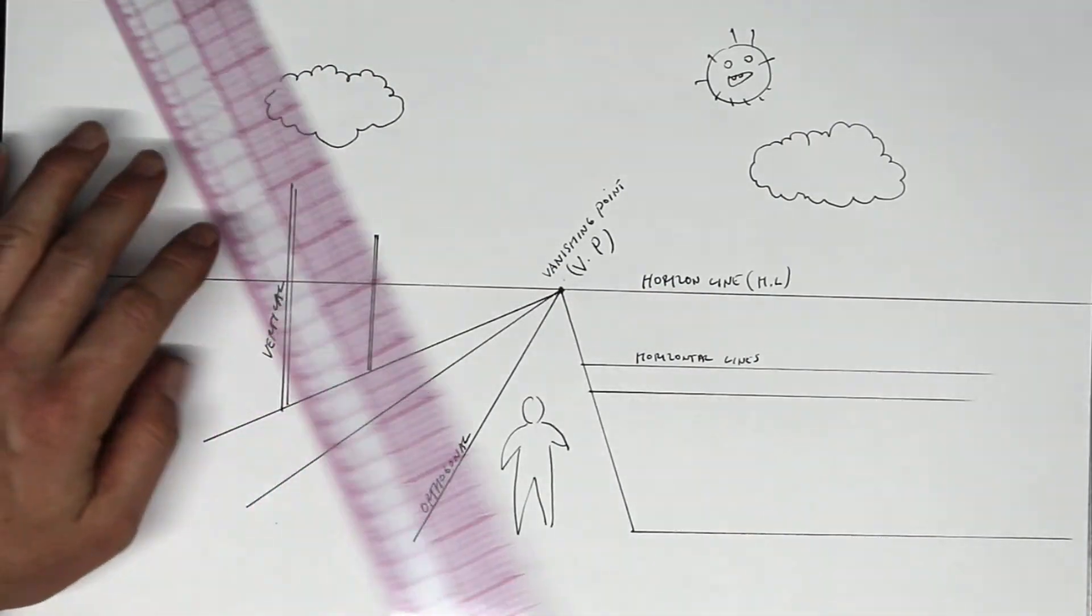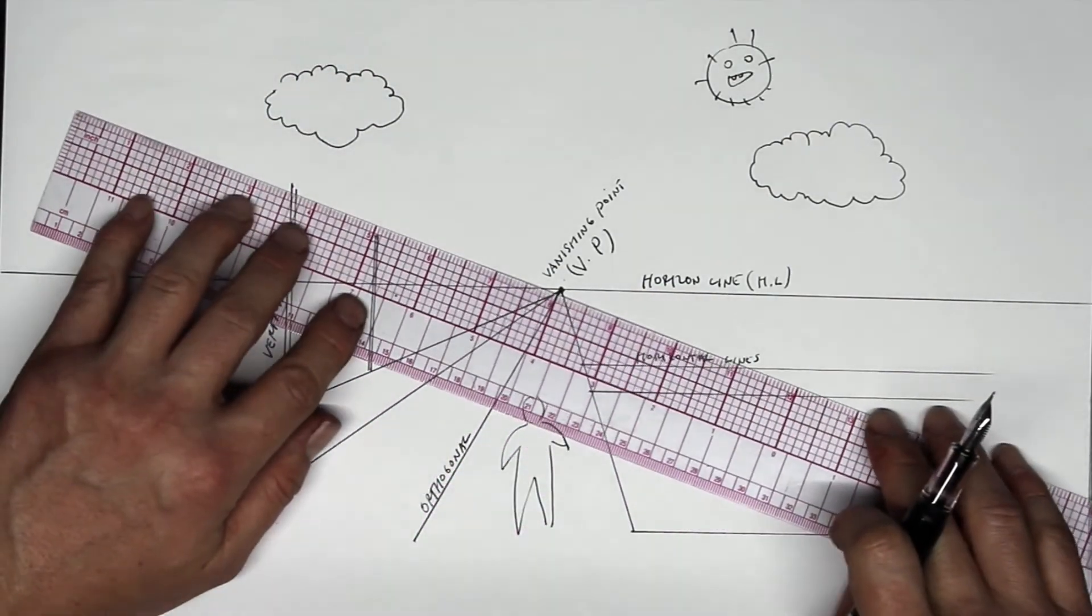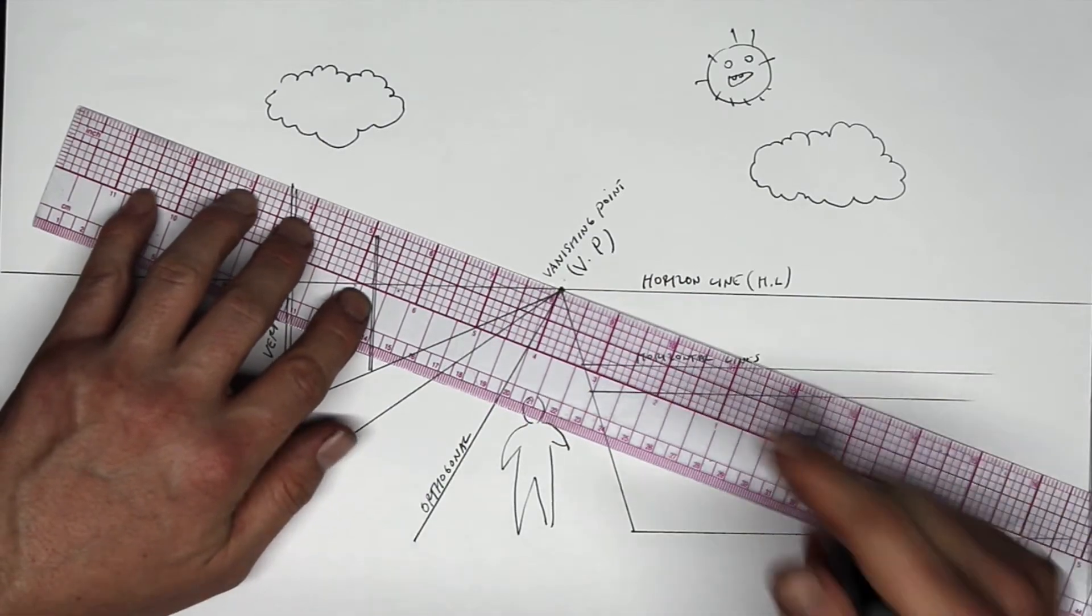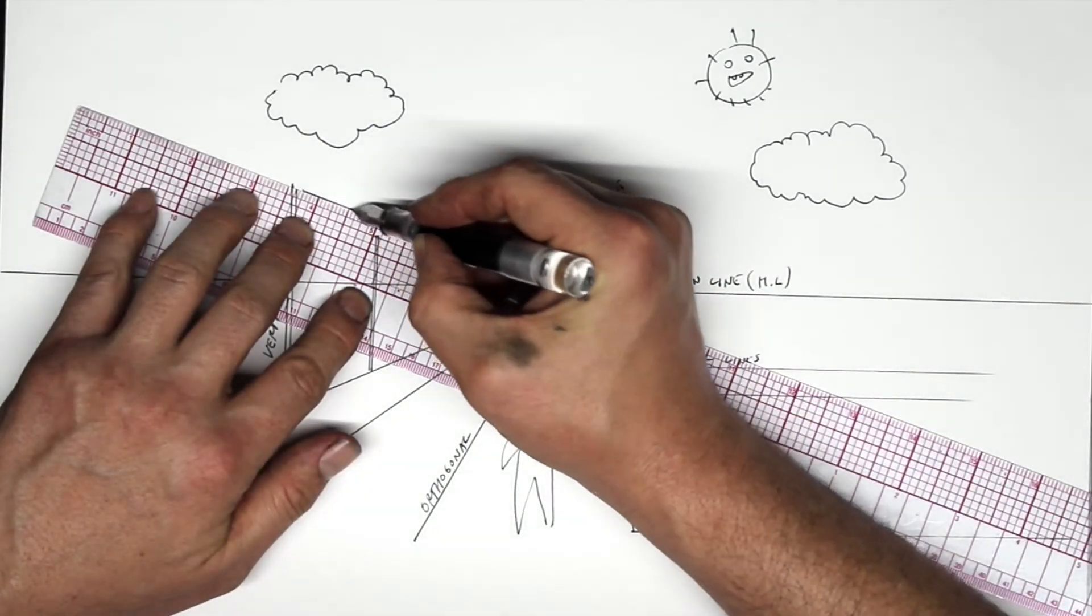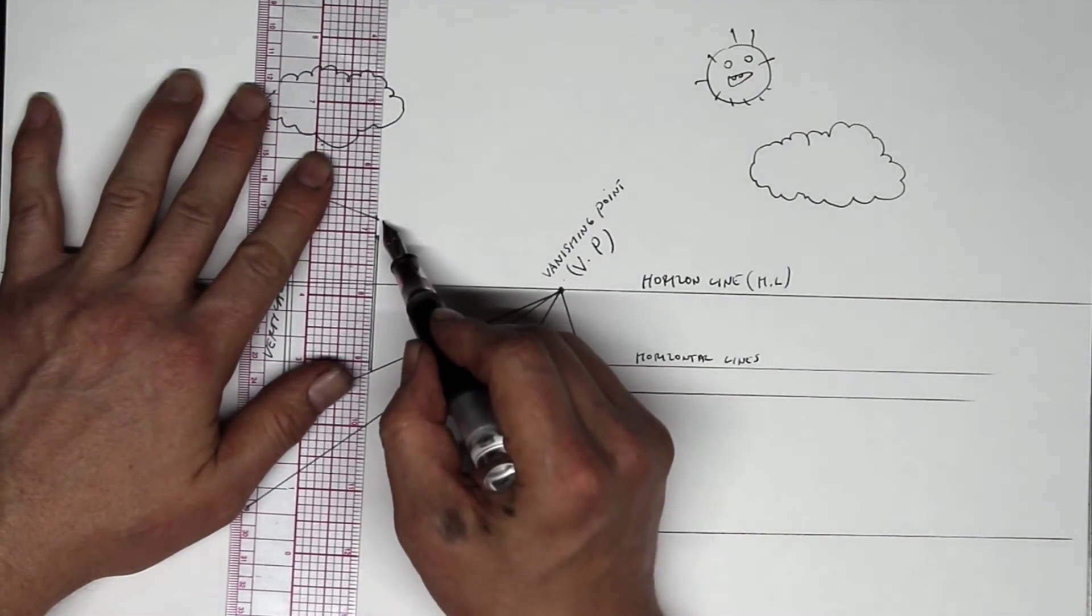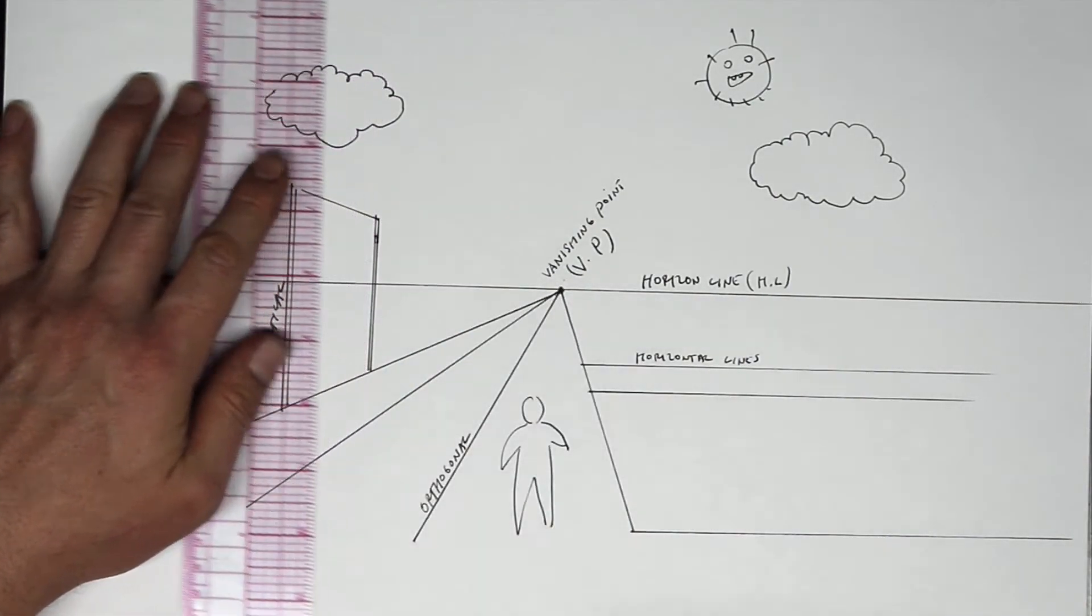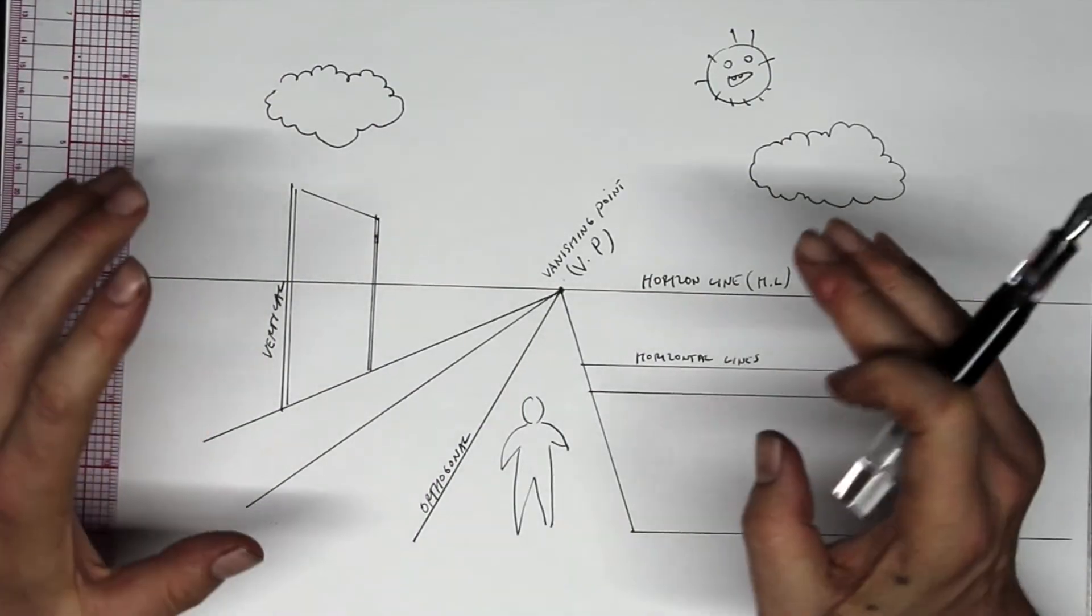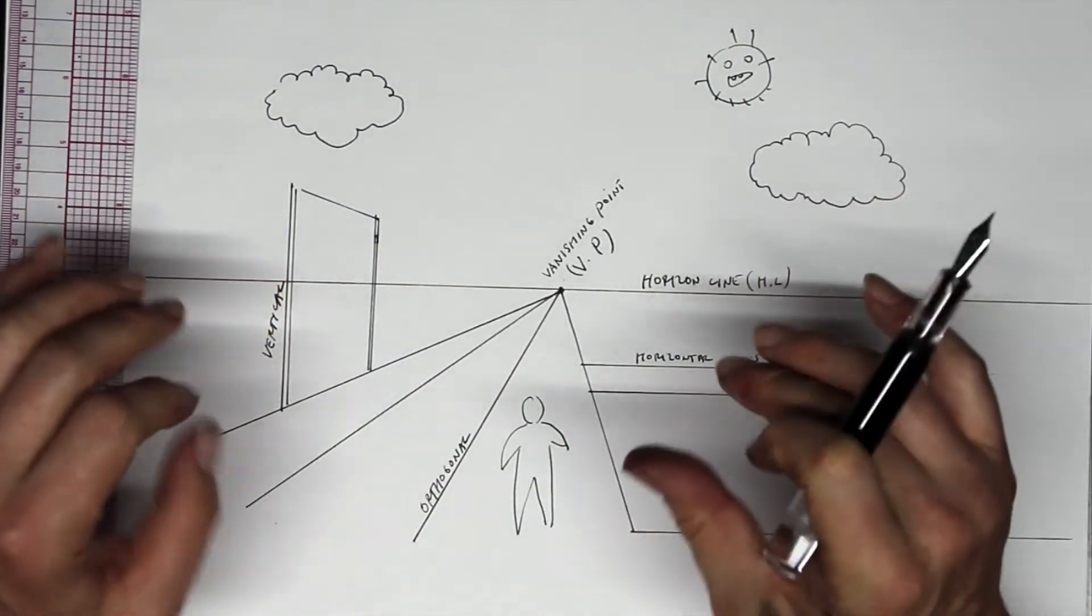The vertical lines on the second telephone pole are going to be parallel to the first telephone pole. So one thing I'm doing right now is I'm actually figuring out what the height of the second telephone pole is, which is one of the things I'm able to achieve using linear perspective.